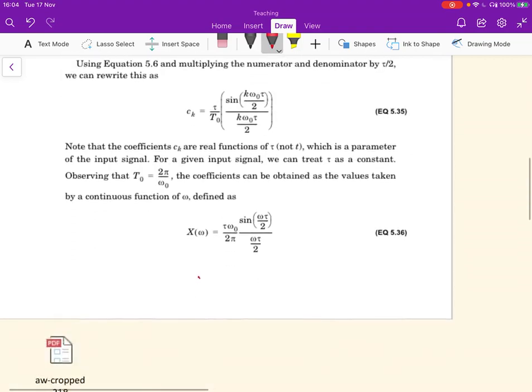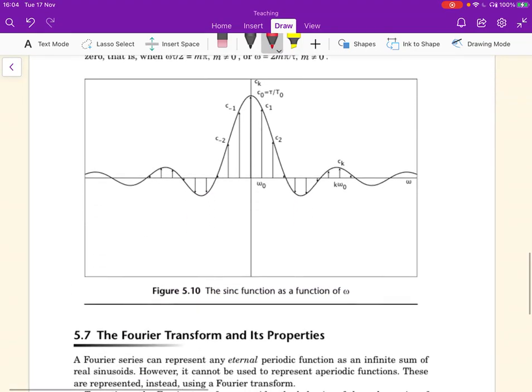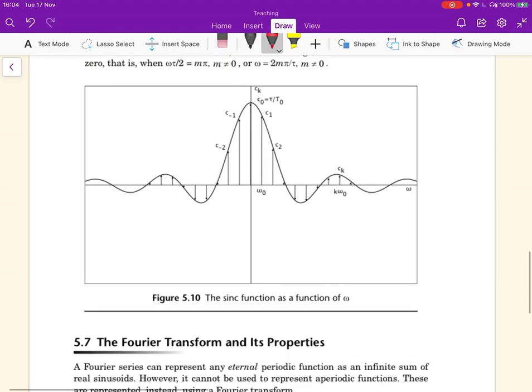And the corresponding Fourier series consists of a set of coefficients Ck. Ck is given by C0, which is over here, C1 is here, C2 is here, C3 is here, and so on. And then correspondingly we have C minus 1, C minus 2, C minus 3.